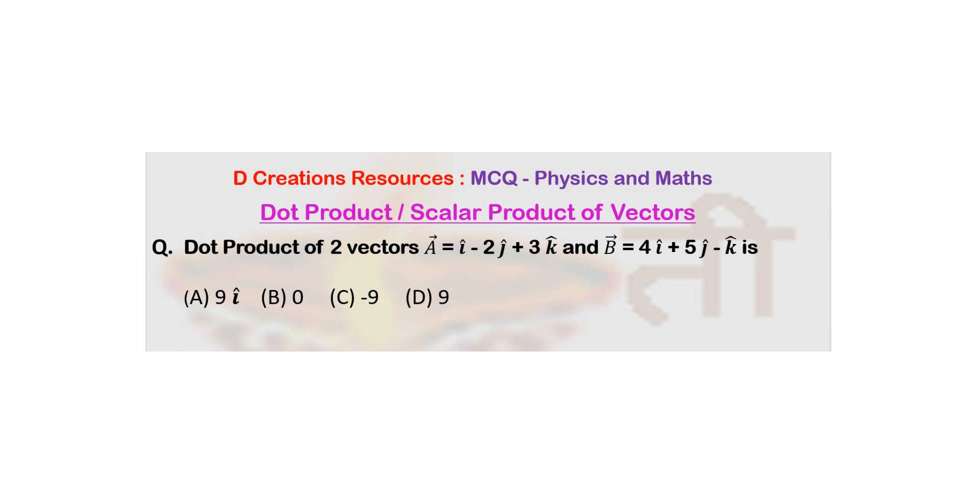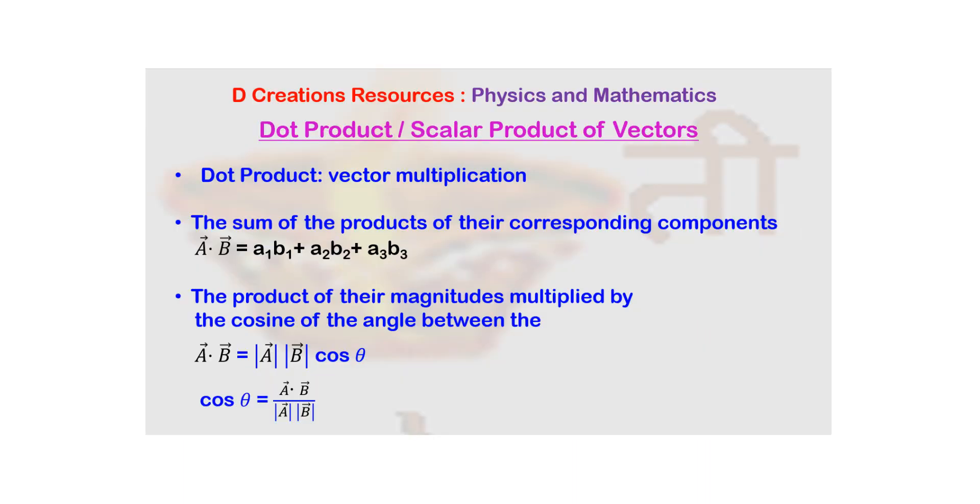For those of you who do not know it, let us proceed with what dot product or scalar product of vectors is. Now the notation you can see it is here, a bar dot b bar. So if there are two vectors, a bar and b bar, this is how dot product is denoted, that is why the name.